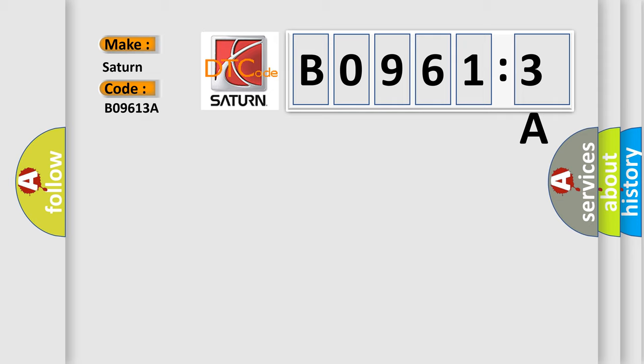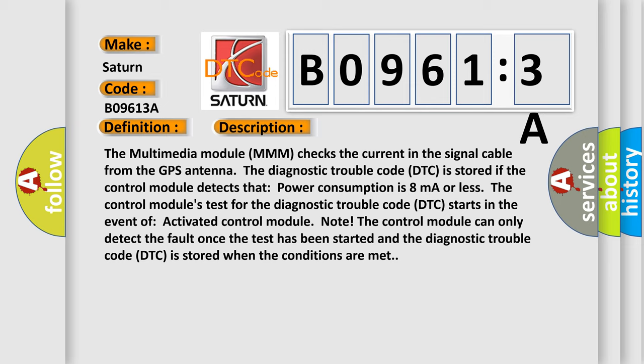The basic definition is GPS antenna open circuit. And now this is a short description of this DTC code. The multimedia module MMM checks the current in the signal cable from the GPS antenna.